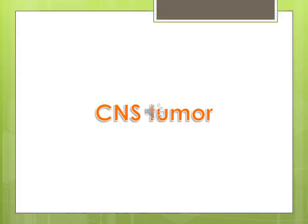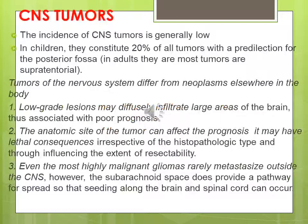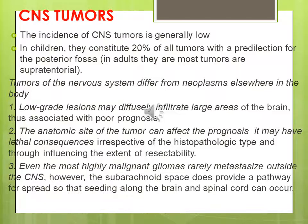CNS Tumor. The CNS tumor is one of the most important pathological lectures concerned with CNS pathology. The incidence of CNS tumor is in general low, but it's most common in children rather than in adults. In children it constitutes about 20% of all tumors with the predilection in the posterior fossa, while in adults it's lower than this percent and most commonly in the supratentorial area.